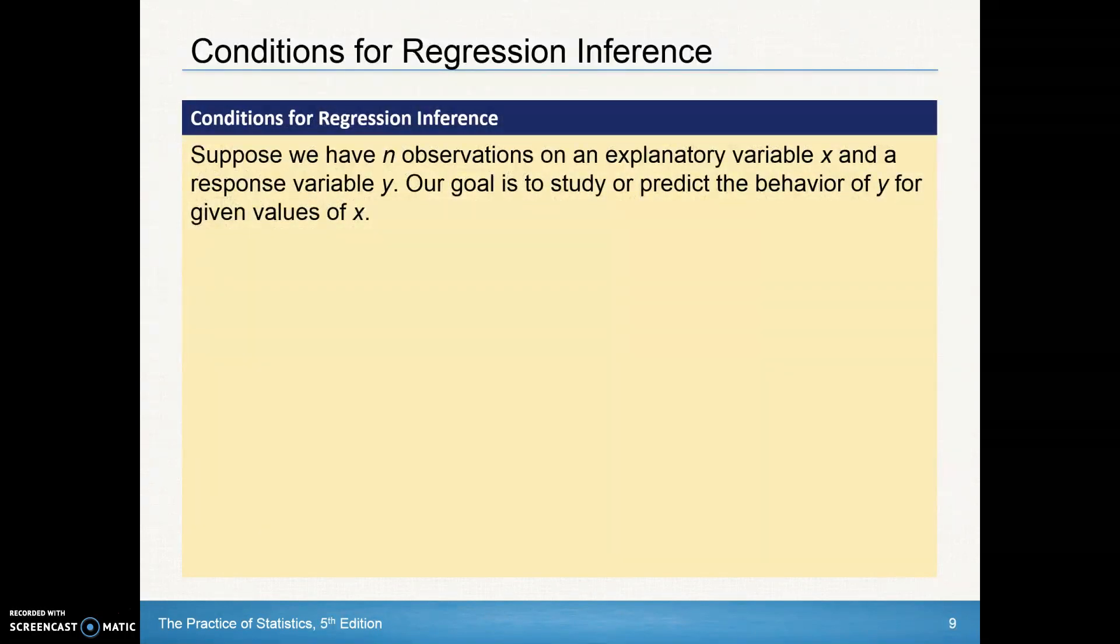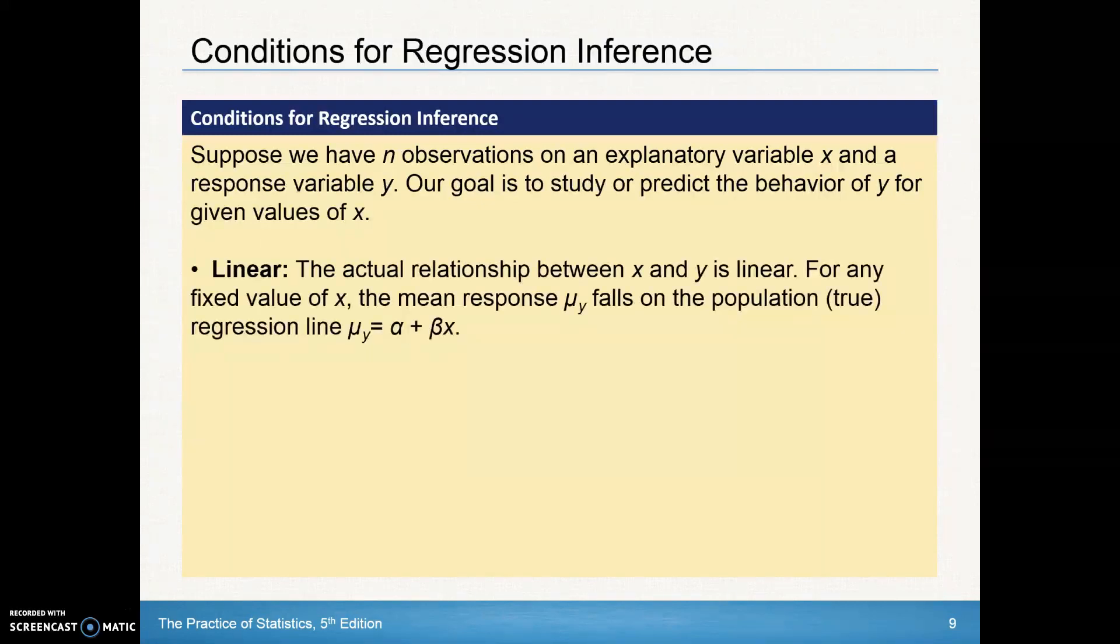So let's look at some of those conditions for regression inference. Suppose we have n observations on an explanatory variable X and a response variable Y. Our goal is to study or predict the behavior for Y for given values of X. I've got a mnemonic device here to help you remember what we do for conditions for regression inference. First, I have to show linear, that the actual relation between X and Y is linear. And for any fixed value of X, the mean response of the Ys falls on the population regression line. So we're going to end up making a little graph for that.